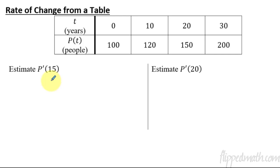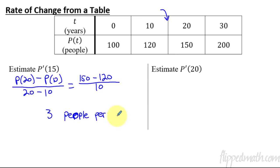Let's estimate p'(15). Well, 15 years is right in between the 10 and the 20, so let's just do the 20th year minus the 10th year, and then that'll give us the rate of change or an estimate of that rate of change at 15. So that's p(20) is 150 minus p(10) is 120, all over 20 minus 10 is 10. So I get 30 divided by 10, that is 3 people per year. So that's our average rate of change for the 15th year using the table to estimate.